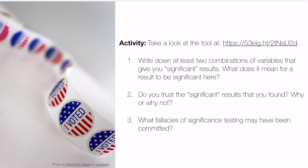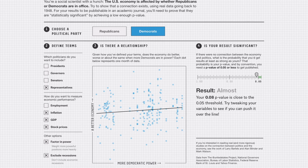There's a really cool demonstration of p-hacking and researcher degrees of freedom on the 538 blog — the link is at the top of this slide. It'd be interesting to work through this activity where we find significant results by manipulating variables on the 538 website. It's called 'Hack Your Way to Scientific Glory,' and it was created by statisticians at 538 to demonstrate some of the issues with using p-values as the sole metric for finding a scientific result.